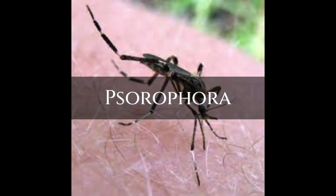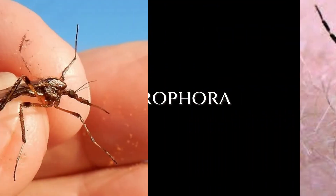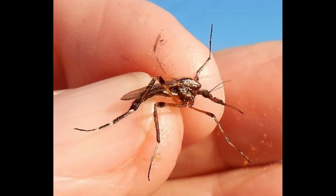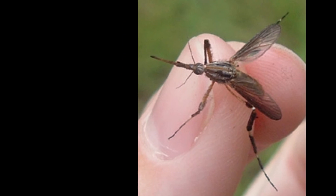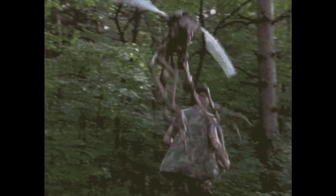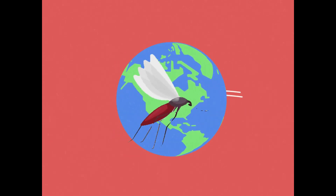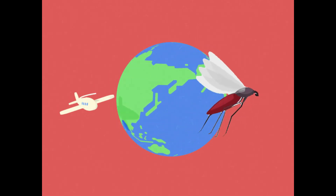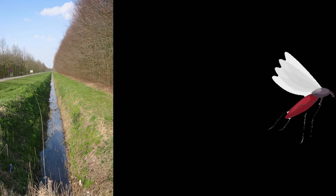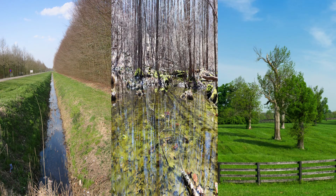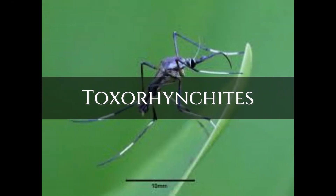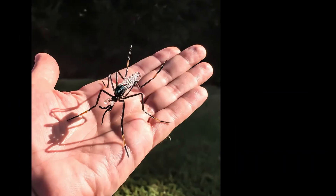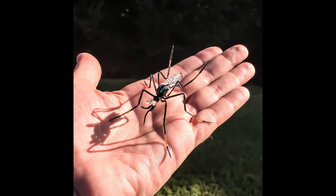Commonly known to feed on large mammals including humans, mosquitoes of this genus are considered to be intensely aggressive. This genus is known to travel long distances in search of blood meals, with breeding grounds at roadside ditches, woodland pools, and pastures.